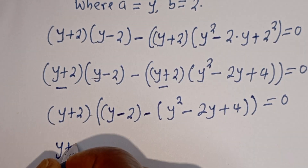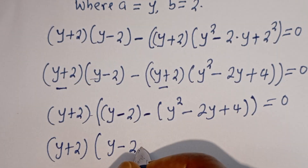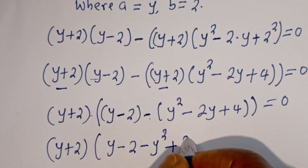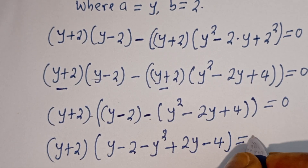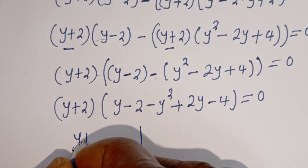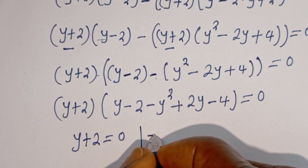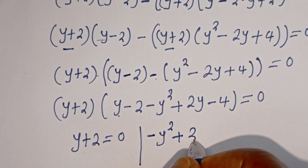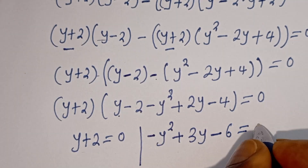Expanding inside the bracket: y minus 2 minus y squared plus 2y minus 4 equals 0. Combining like terms: minus y squared plus 3y minus 6 equals 0. So we have two cases: the first case is y + 2 = 0, and the second case is minus y squared plus 3y minus 6 equals 0.